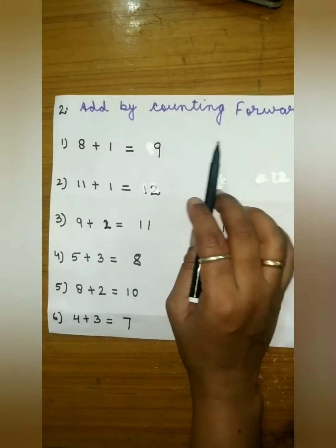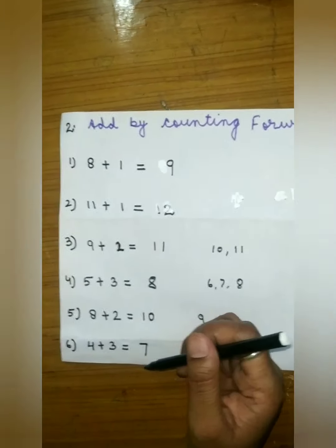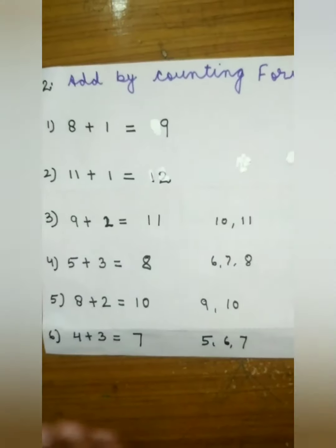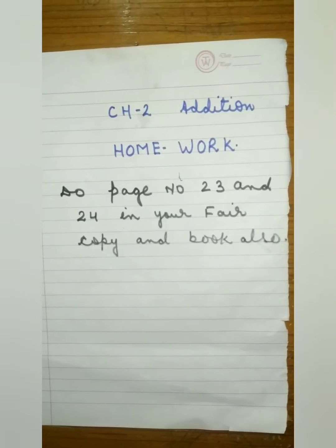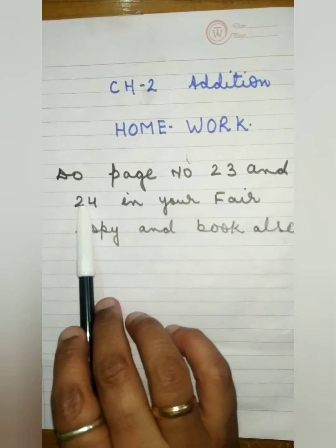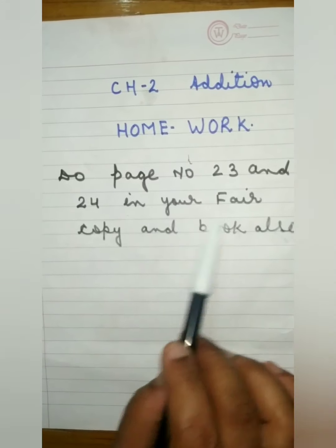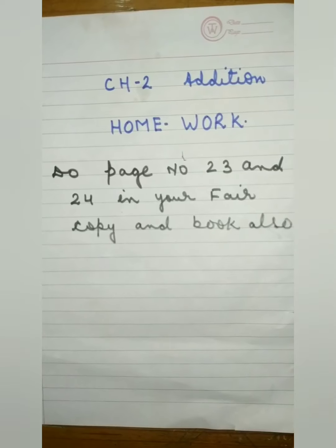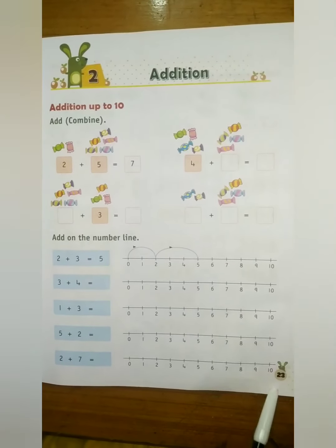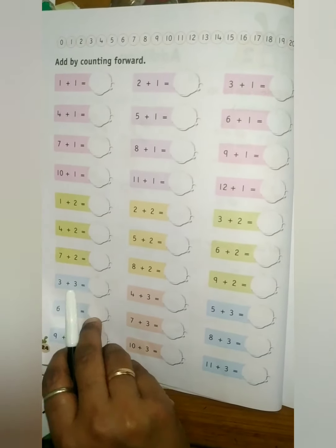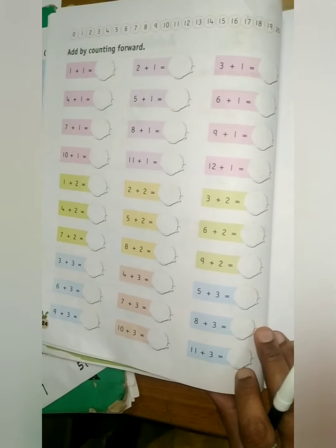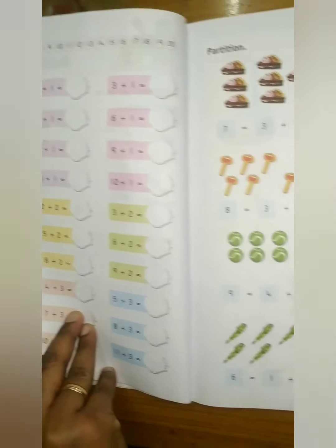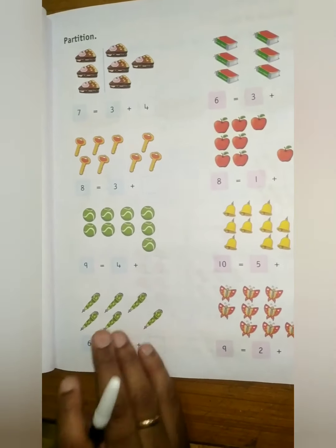These are the examples of counting forward. Write all these examples in your copy. This is enough for today — now it is homework time. Today's homework is to do page number 23 and 24 in your fair copy and book also. Complete your homework very soon. I will meet you in my next video — till then, bye bye.